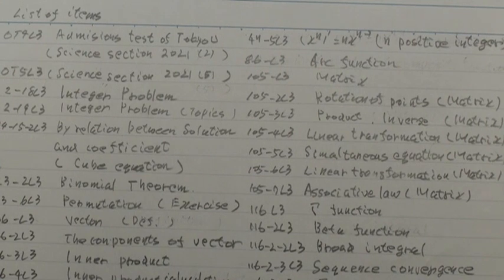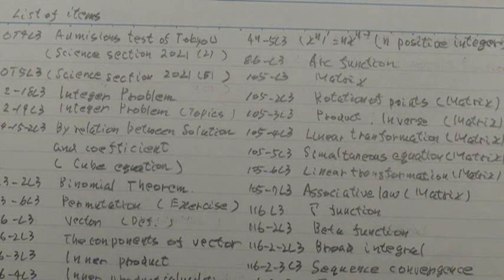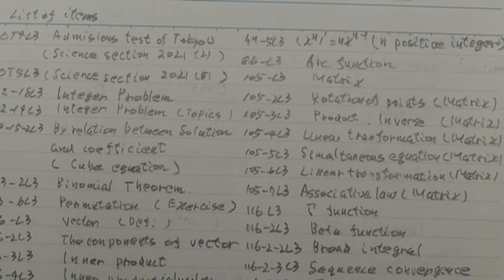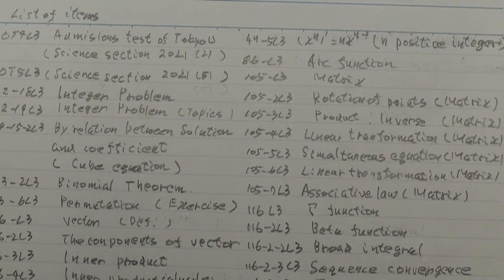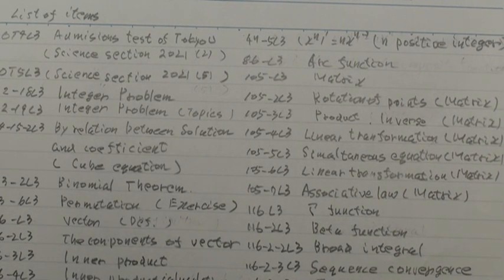And next, 47th branch 5LT, X at N dash equal N times X at N minus 1, N as positive integer.